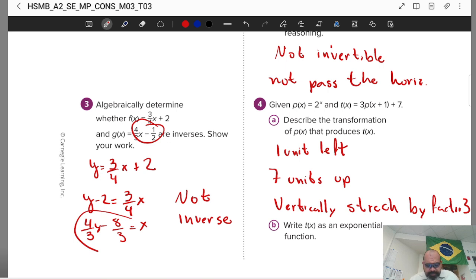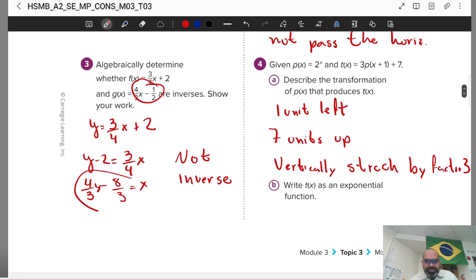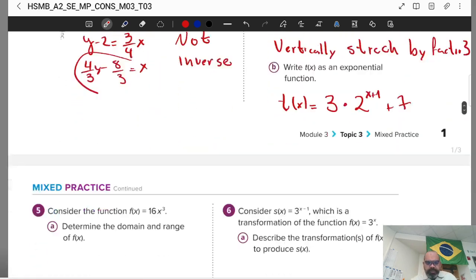Part B: Write t of x as an exponential function. It's just writing this x plus one to the power of the thing. T of x equals three times, because multiply by three, my p of x is two to the x power. But my x is not x anymore, now it's x plus one. Plus one, plus seven. That's it.